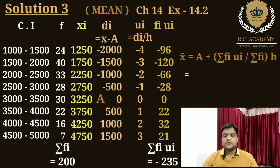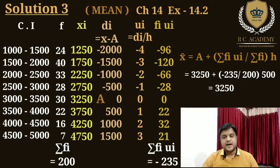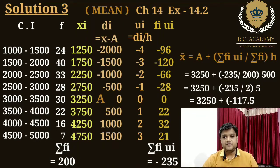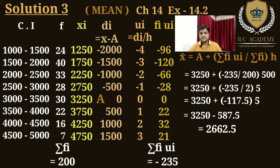Dekho, a = 3250; Σfi·ui = -235; Σfi = 200; h = 500. Toh: x̄ = 3250 + (-235/200) × 500. Simplify: 3250 + (-235/2) × 5 = 3250 + (-117.5) × 5 = 3250 - 587.5 = 2662.5.